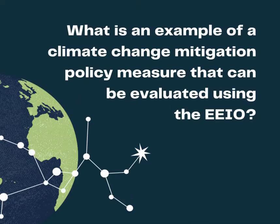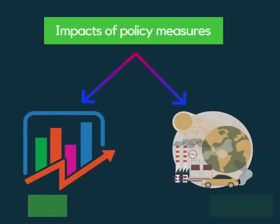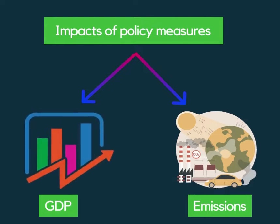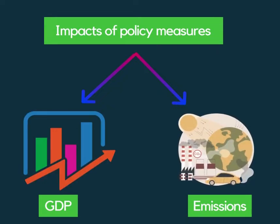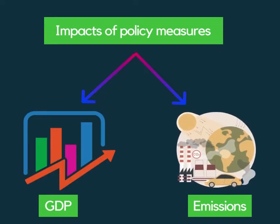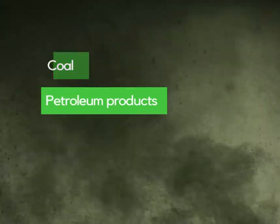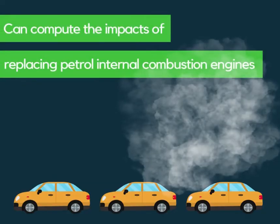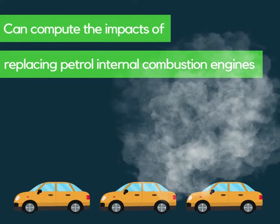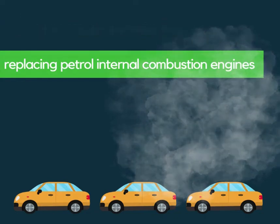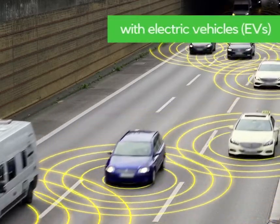So, what is an example of a climate change mitigation policy measure that can be evaluated using the EEIO? Using this table, we can simulate the impacts of policy measures both on the GDP and the total greenhouse gas emissions from the burning of fossil fuels, including coal and petroleum products. For example, we can compute the impacts of replacing petrol-based internal combustion engine vehicles with electric vehicles on emissions.